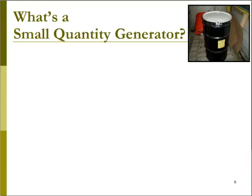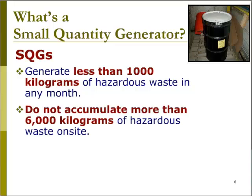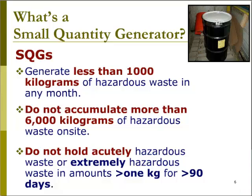What is a small quantity generator of hazardous waste? Small quantity generators generate less than 1,000 kg of hazardous waste in a month. They never accumulate more than 6,000 kg total of hazardous waste on site, and a small quantity generator does not hold more than 1 kg of acutely or extremely hazardous waste for more than 90 days.